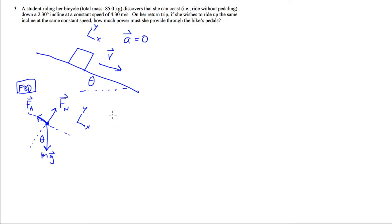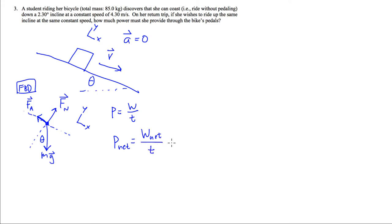Now I'm going to find the net power on her, because the question asks how much power she would provide the bike's pedals. Power is the rate of work done over time. Applying the work-kinetic energy theorem, net power equals net work done divided by time, which equals the change in kinetic energy. Since she's going at constant speed, that change is zero, so net power is zero.